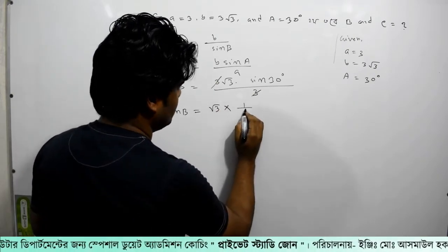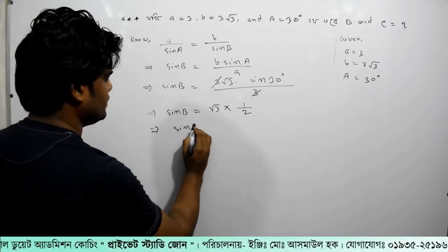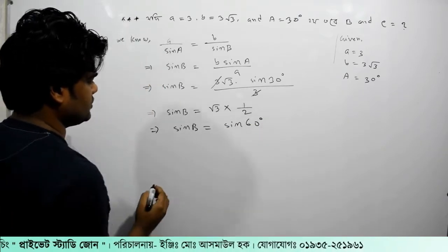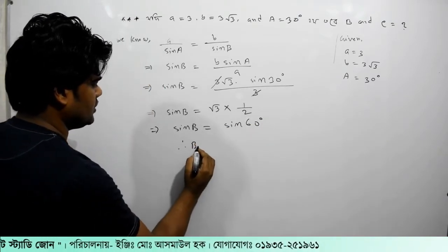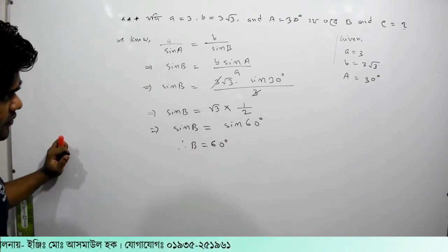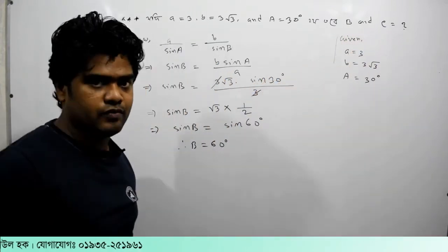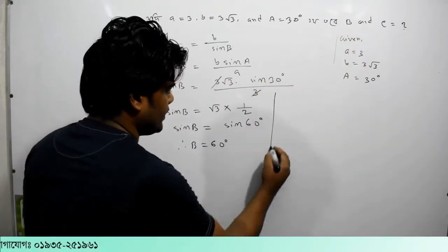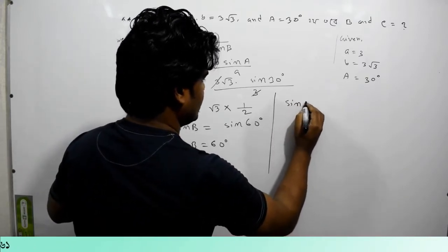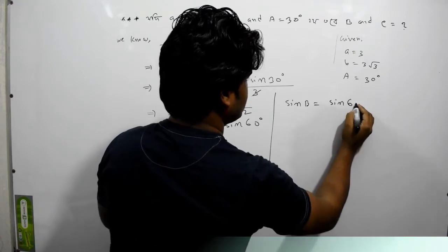sin 30 degrees means half. So sin B equals root 3 into half, which is root 3 by 2. Therefore sin B equals sin 60 degrees, so B equals 60 degrees.